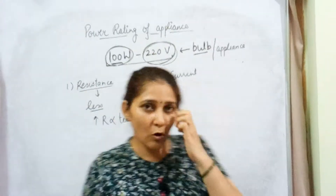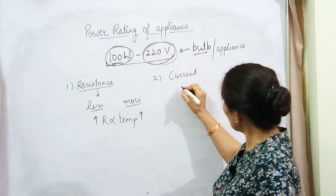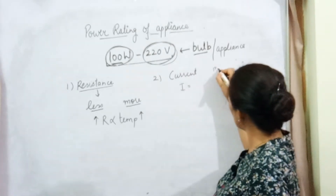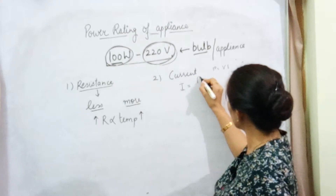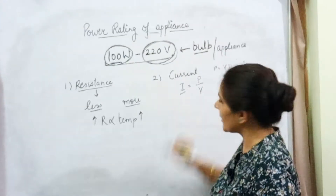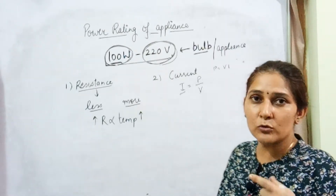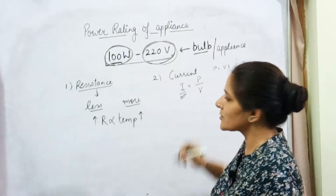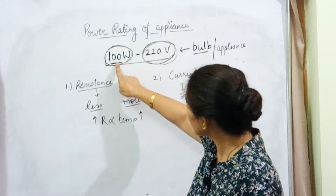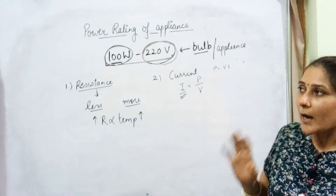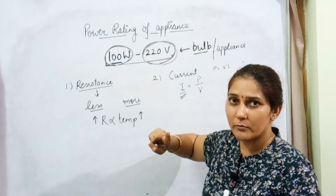The second thing we talked about is the safe limit of current. I want to revise it again. This value of current which we are getting from P = VI — current is calculated with the help of P upon V. This value of current gives us the safe value of current. If the value of current flowing through the appliance exceeds this, the appliance may get damaged. Now with the help of this power rating, what else can we find out? I told you in the beginning — this current rating is valid only when the appliance is working at the rated potential difference.